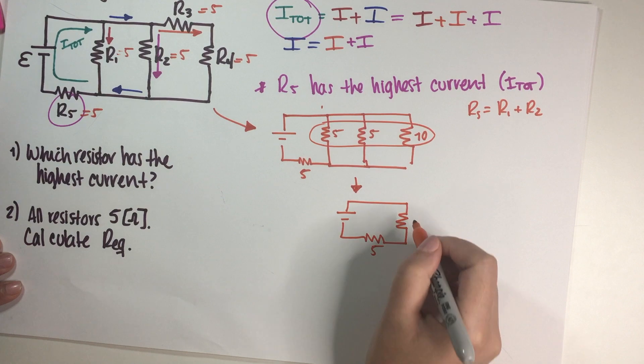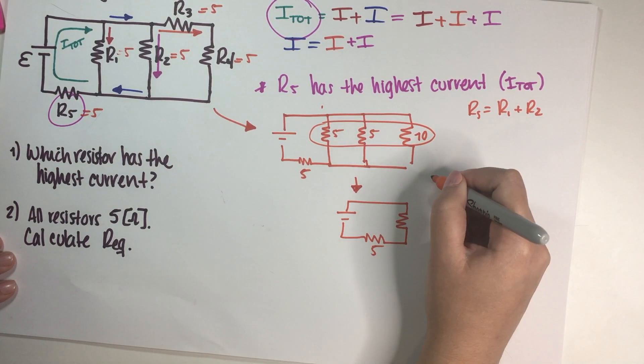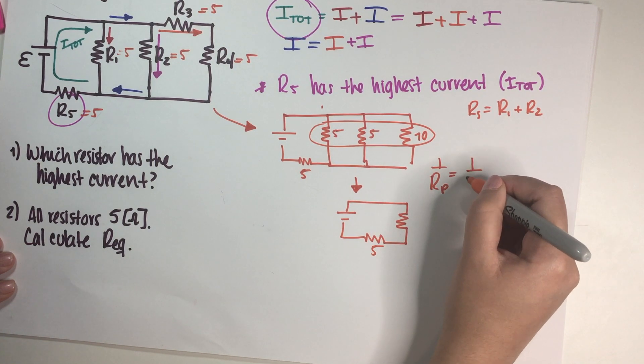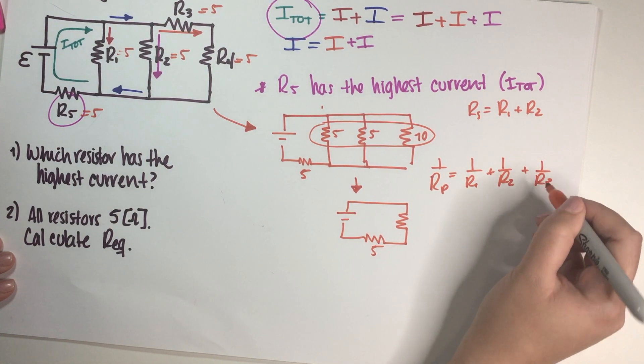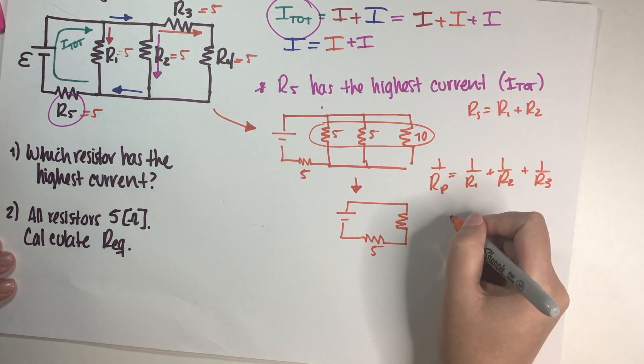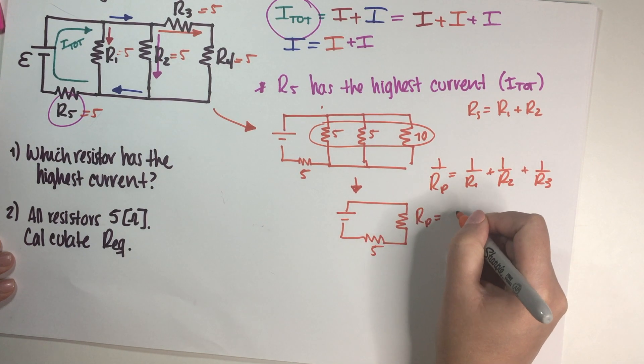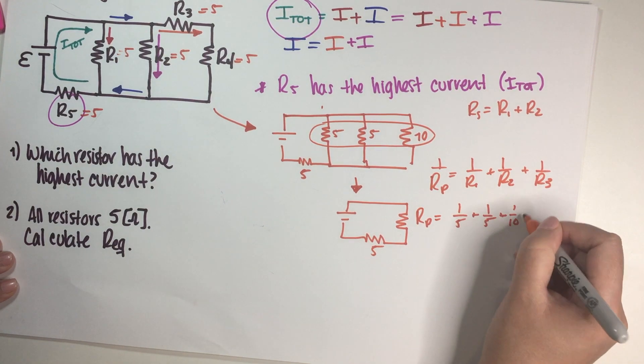So this is still 5, and then this is the parallel. So R in parallel, well, one over R in parallel is one over R1 plus one over R2 plus one over R3. So in this case, R in parallel is one over R3 plus one over R3 plus one over R3.